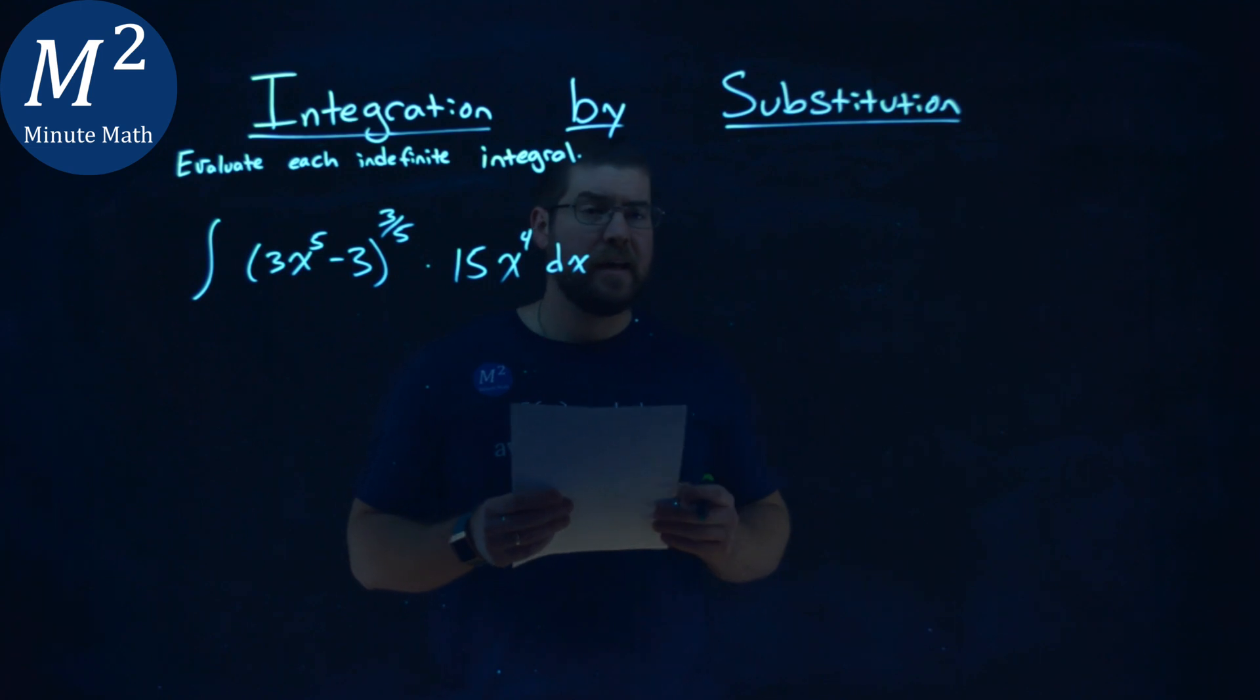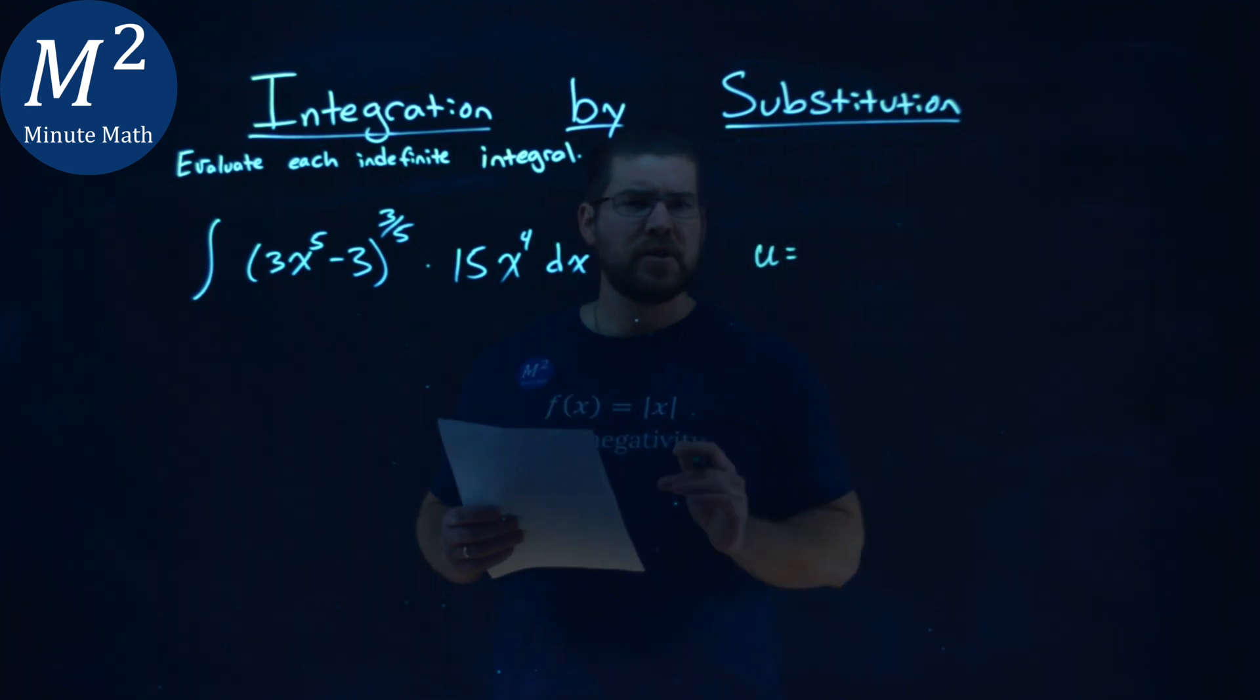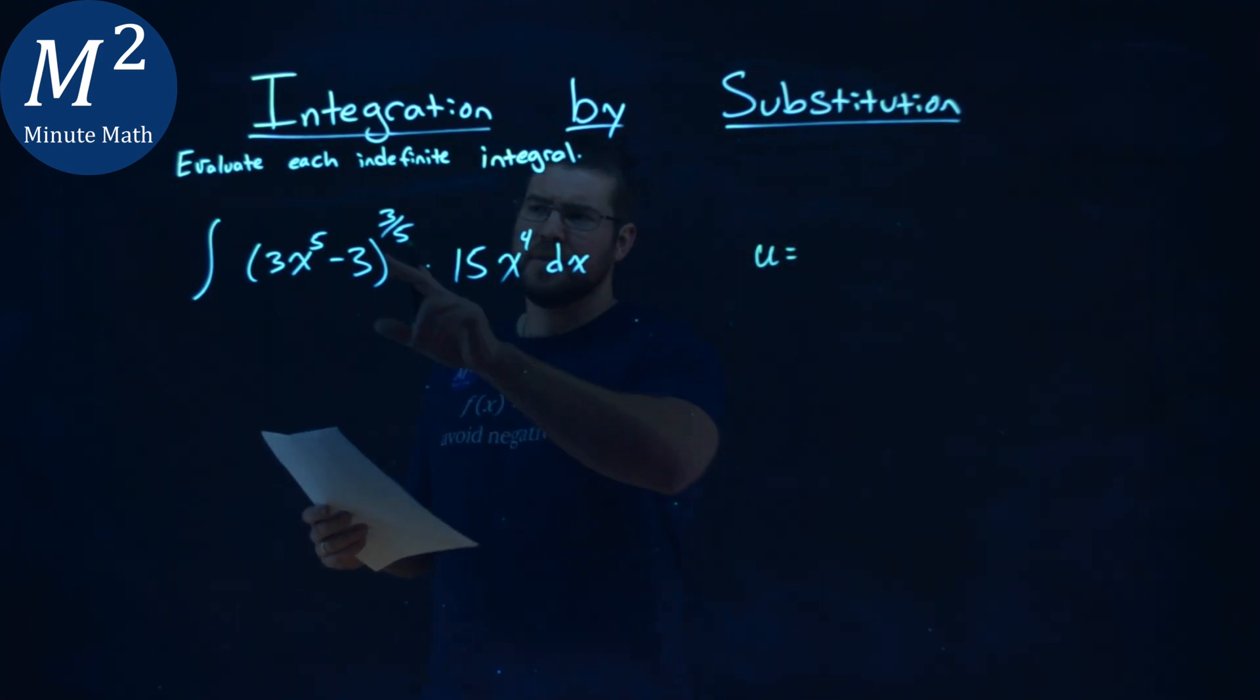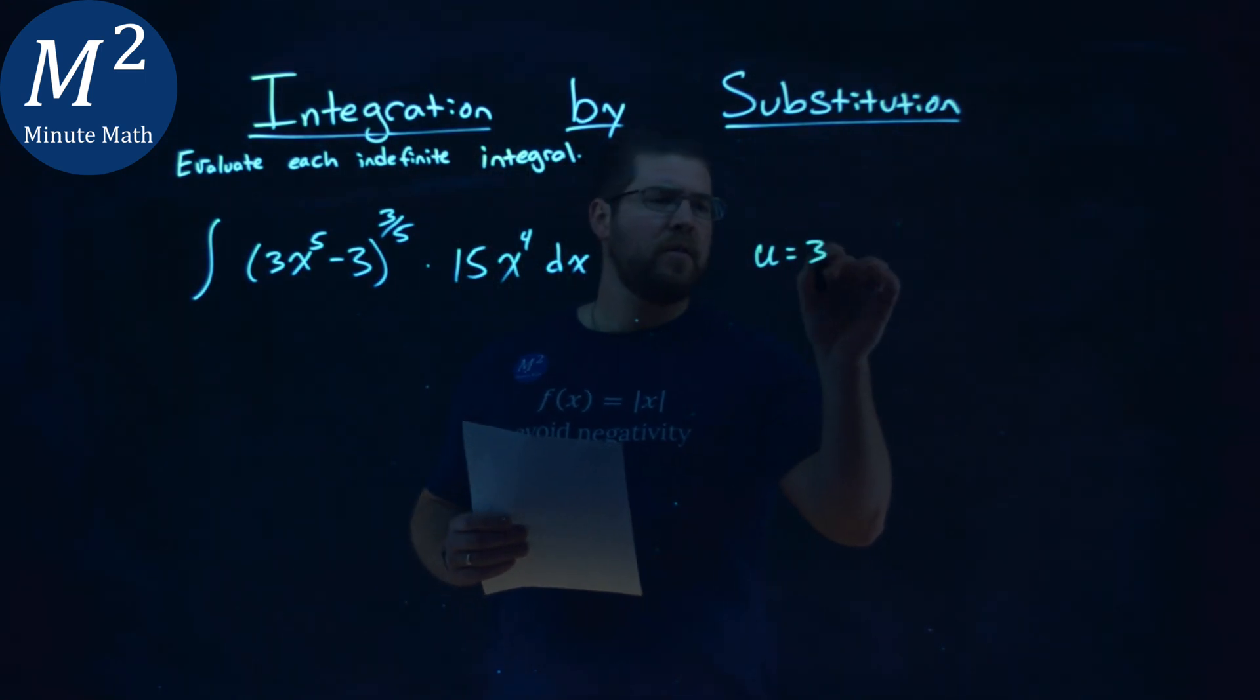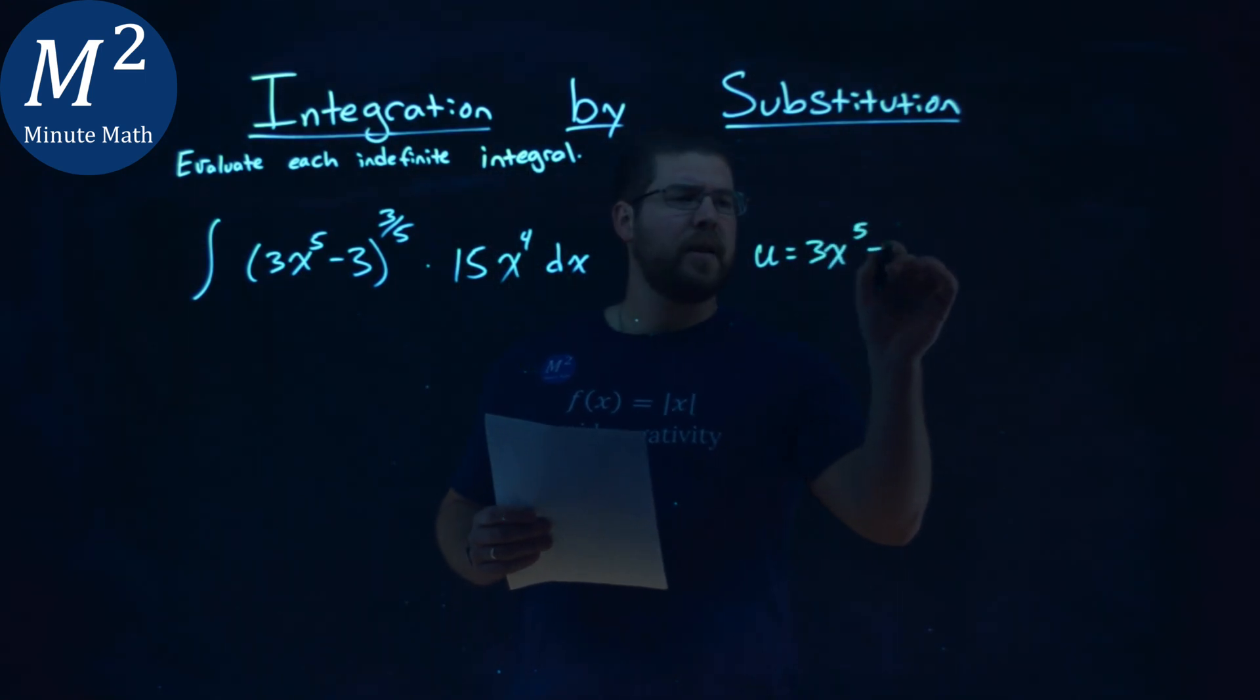I first want to find a u value, and generally I pick a u value to try first that's inside the parenthesis, so let's do that. 3x to the 5th minus 3.